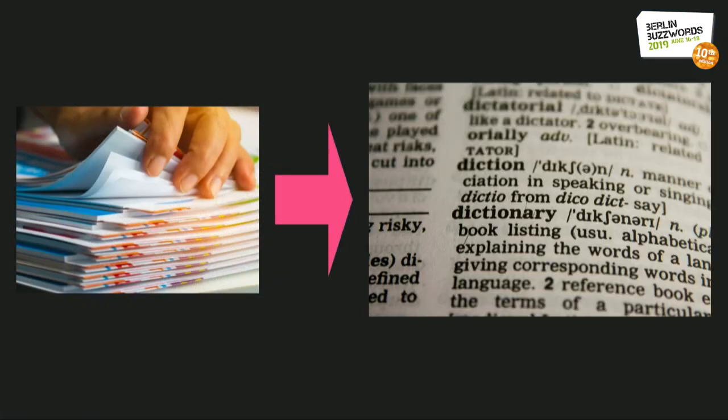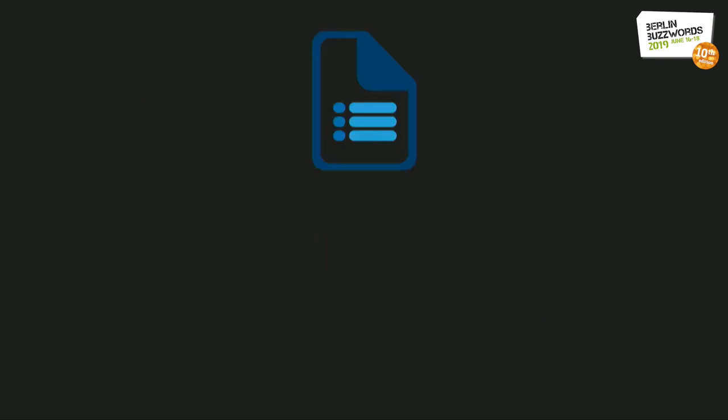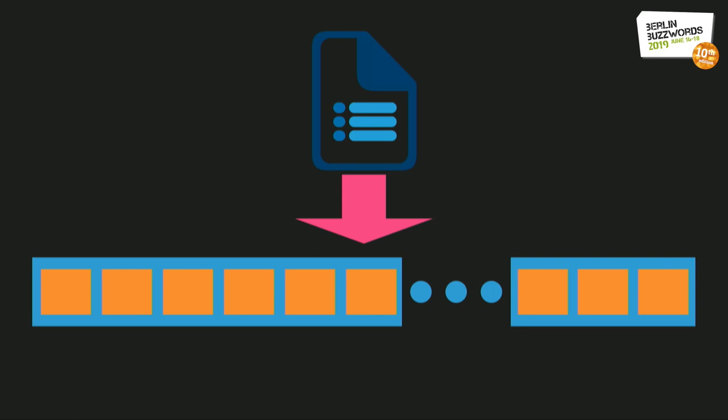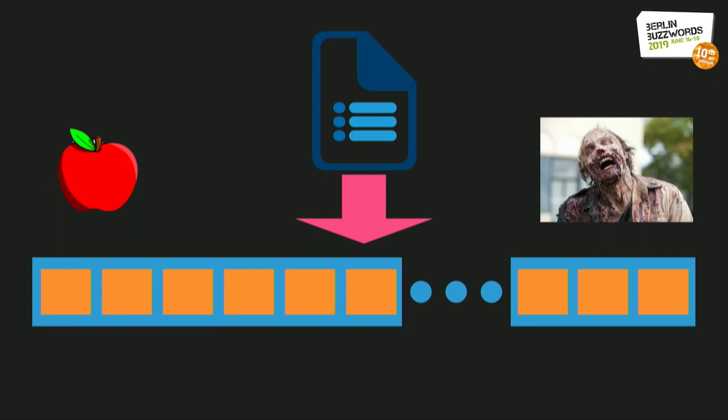So let's start with transforming text into a vector. As a first approach, we could start with a large dataset of text examples, make a dictionary of all the unique words, and then create a vector for each document where every component corresponds to a word in the dictionary—set to the number of times that word appears. If a word doesn't appear, its component is zero.